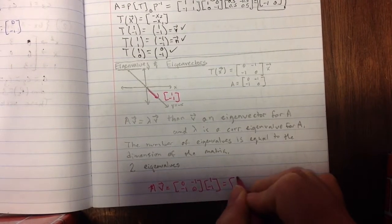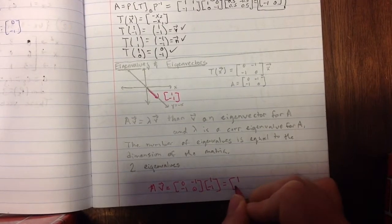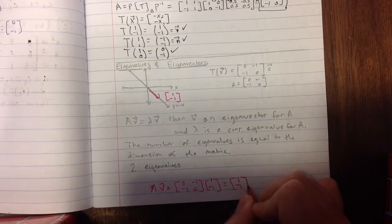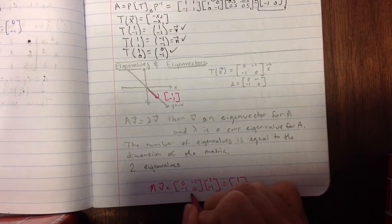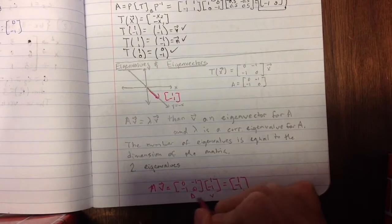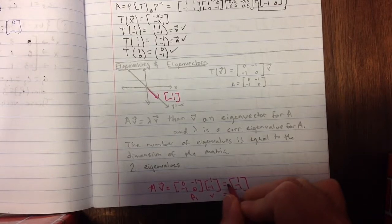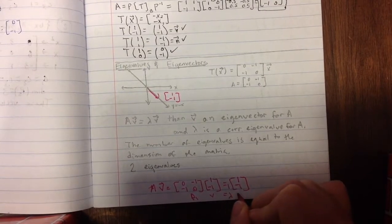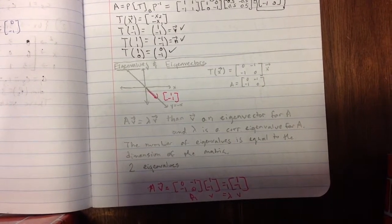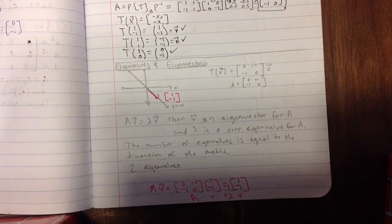And that's equal to [1, -1]. So it's equal to the exact same vector here. So I've got A times v is equal to 1, that's my eigenvalue, times my vector v. And we knew that because it just stays there.